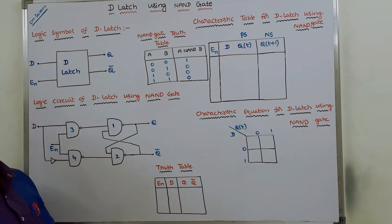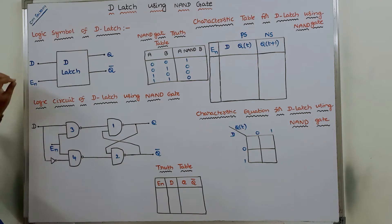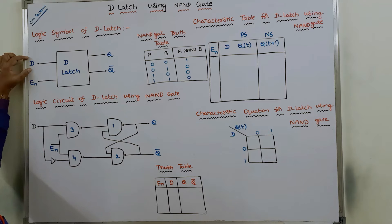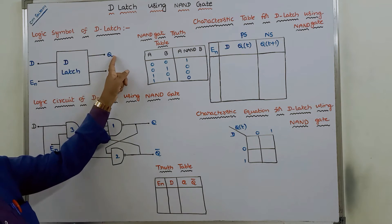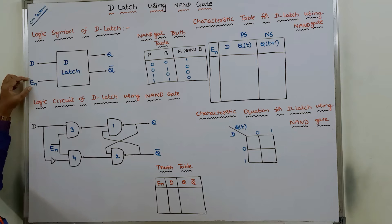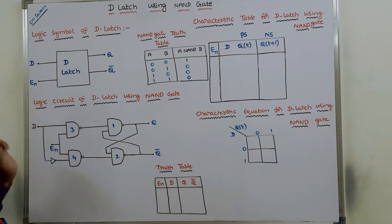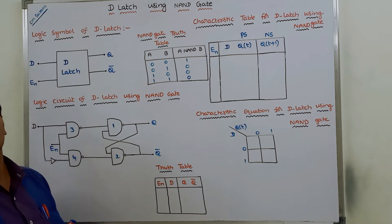Before implementing D latch using NAND gates, what is the block diagram of D latch — that means what is the logic symbol? The logic symbol of D latch takes only one input, that is D, and it produces two outputs: one is Q and another one is Q bar. Q and Q bar are complemented to each other. There is also a control input, also called the enable input, which controls the operation of the D latch.